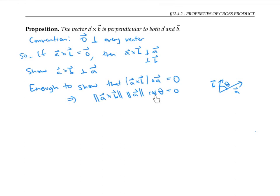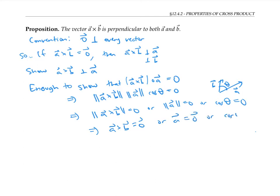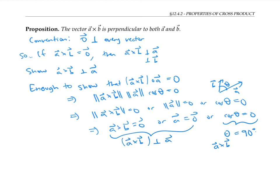And if the product of these things is equal to zero, then either the length of A cross B is zero, or the length of A is zero, or cosine of θ is zero. Well, if the length of a vector is zero, then the vector itself is zero. So we have that either A cross B is the zero vector, or A is the zero vector, or cosine θ is zero. Now by our convention, the zero vector is perpendicular to any other vector. So in those cases, we definitely have that A cross B is perpendicular to A. And in the more interesting case, cosine θ equals zero means that θ, the angle between the vectors, must be 90 degrees, and so A cross B and A are indeed perpendicular. So it is indeed enough to show that the dot product is zero.